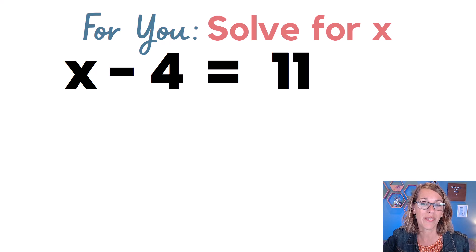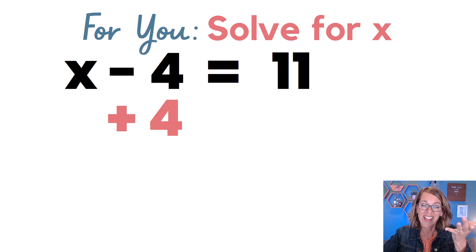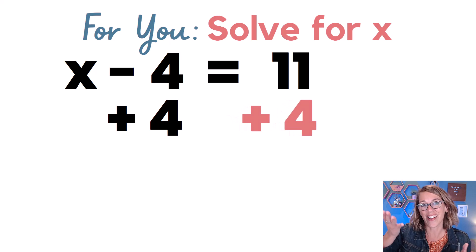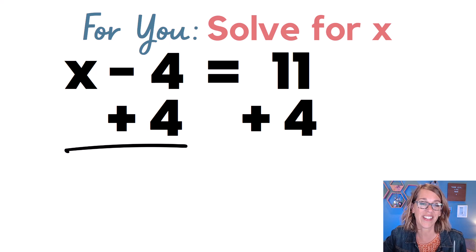Now, I've got x minus 4 is equal to 11. I want to undo that subtraction by 4 to get x by itself. So I'm going to add a 4 on the left-hand side. And whatever I do to one side, I've got to do to the other side. So we're going to go ahead and do the math on this one.